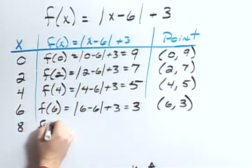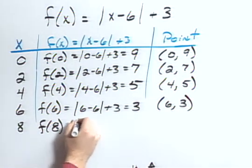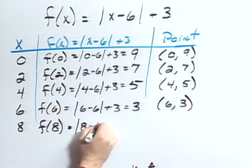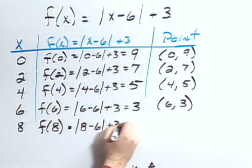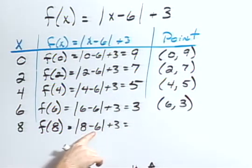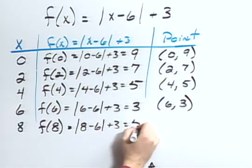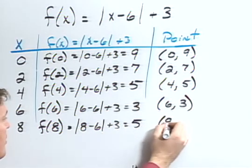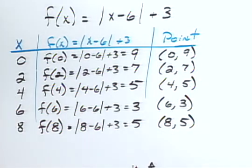And 8, f of 8 would be the absolute value of 8 minus 6 plus 3. 8 minus 6 is 2. The absolute value of 2 is 2. 2 plus 3 is 5. So I have the coordinate 8, 5.